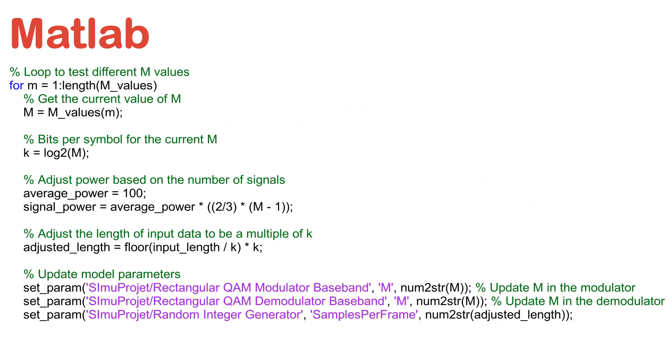The MATLAB code contains two main loops. The first loop handles the variation of M, the number of QAM symbols. For each M value (4, 16, or 64), we adjust the number of bits per symbol, which is the logarithm base 2 of M.